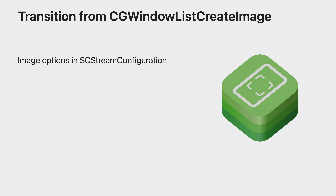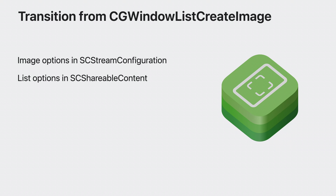If you're using CGWindowListCreateImage, there are a couple of things that will make the transition to Screen Capture Kit easier. All the window image options available for the CGWindowList API can be found inside the SCStreamConfiguration class in Screen Capture Kit. The window list options, like getting all windows above a certain window ID, are provided inside SCShareableContent. And if you're used to working with CGImage output, the new screenshot API provides a CGImage output format that's easy to integrate into your existing code.